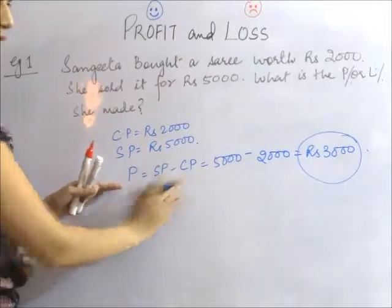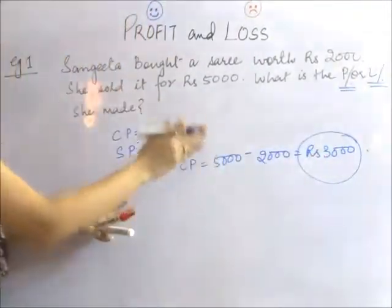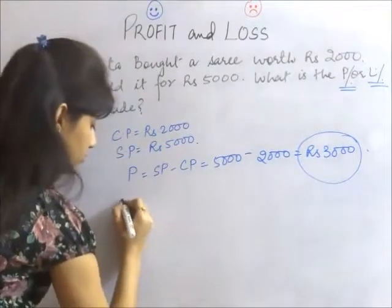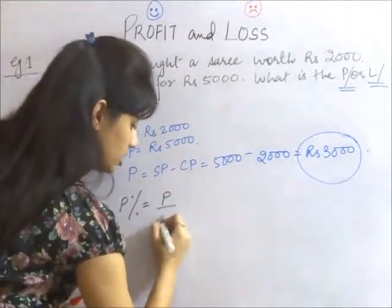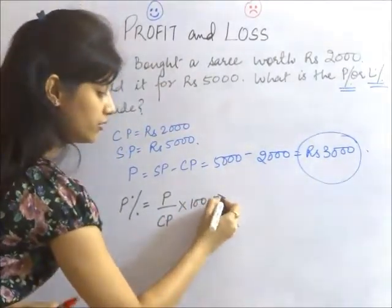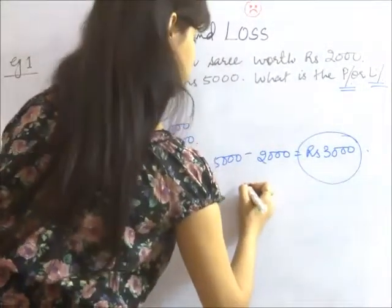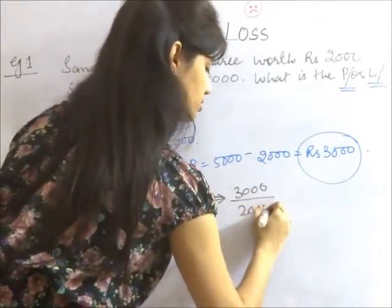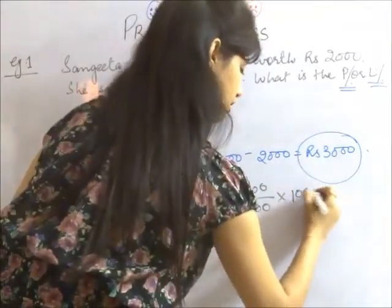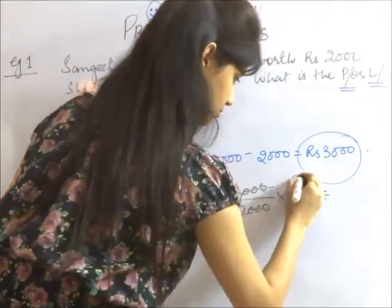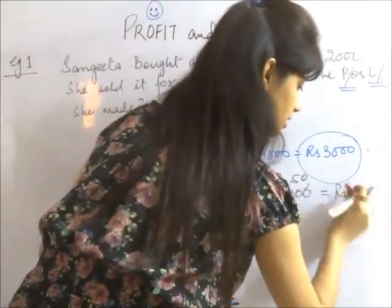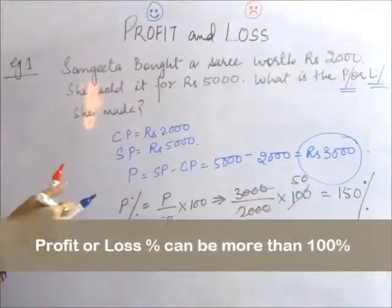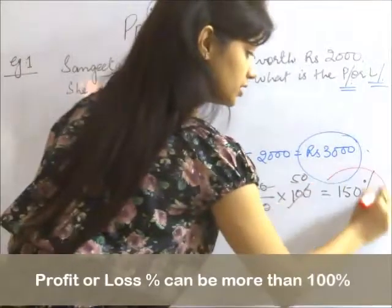Don't stop here. Read. They have asked to calculate the profit percentage or loss percentage. So, moving ahead profit percentage which is equal to profit upon cost price multiplied by 100 which comes out to be Rs. 3000 divided by the cost price, Rs. 2000 into 100. This is profit. So, there will be percentage of 150 percent. So, she made a profit of 150 percent.